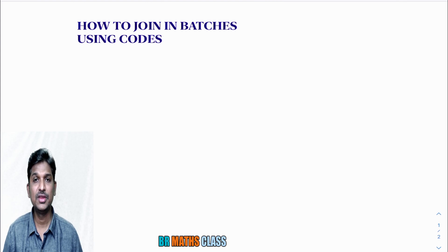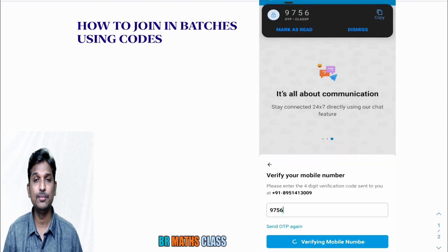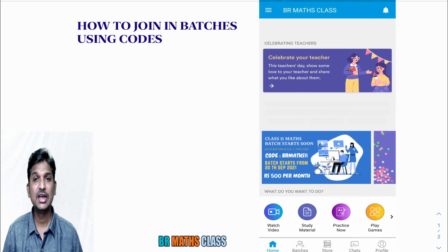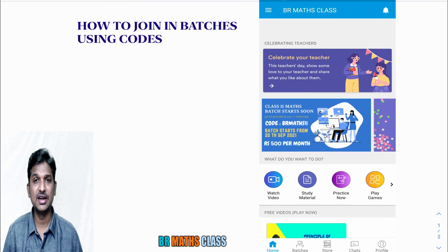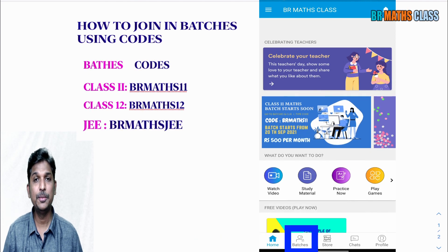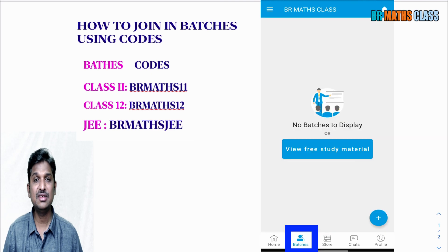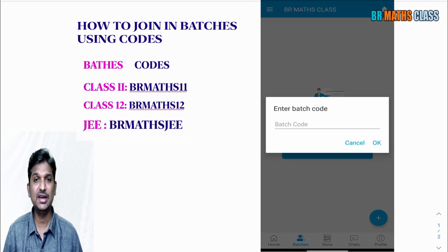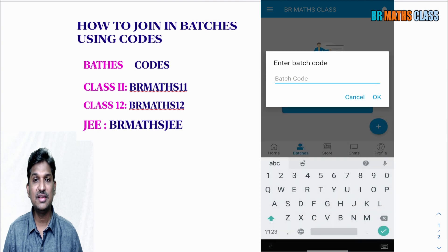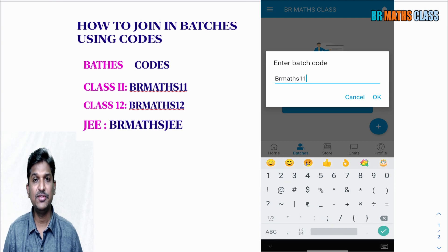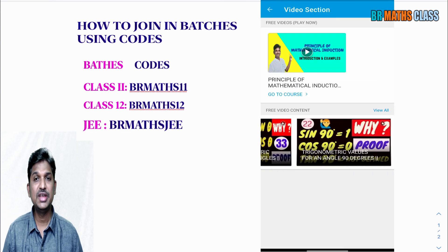Once your OTP is verified, it asks your name. Type your name and click the button 'Let's get started.' Now you can see the batches section below. Click the blue color plus icon in the batches section. After clicking that plus icon, type which class you want to join. For example, if you want coaching for class 11 Max, you type BR Max 11 and send a request to me.